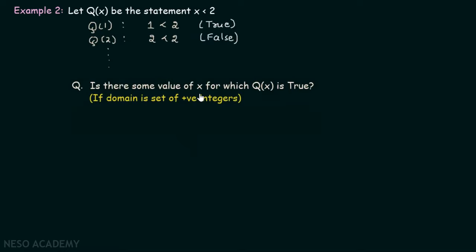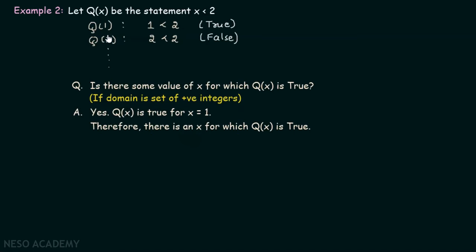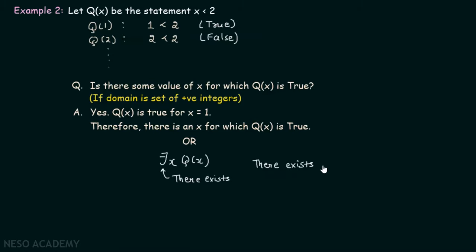So my question is: is there some value of x for which q(x) is true, if the domain is the set of positive integers? Yes, of course — q(x) is true for x = 1. Therefore, there exists some x for which q(x) is true. We represent this as: there exists x, q(x). This is also a quantifier, and it represents 'there exists.' We read it as: there exists some x for which q(x) is true.